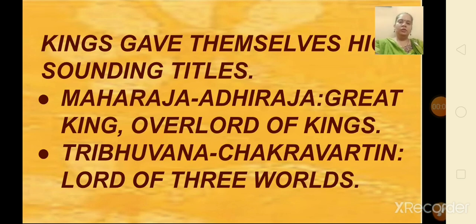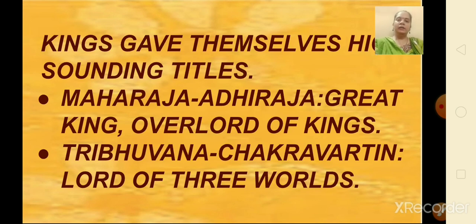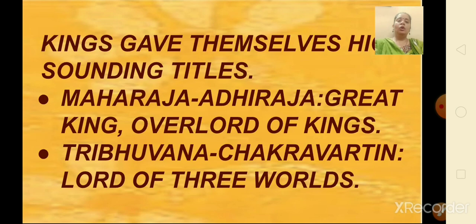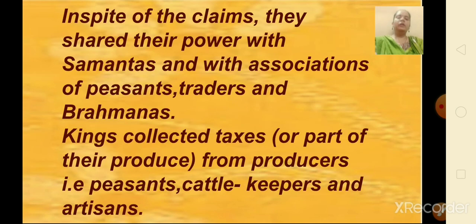Let us look at the next topic: administration in the kingdoms. Many of the new kings adopted high-sounding titles — for example, Maharajadhiraja meaning great king or overlord of kings, and Tribhuvana Chakravartin meaning lord of three worlds. In spite of these claims, they shared their power with samantas and with associations of peasants, traders, and Brahmanas.